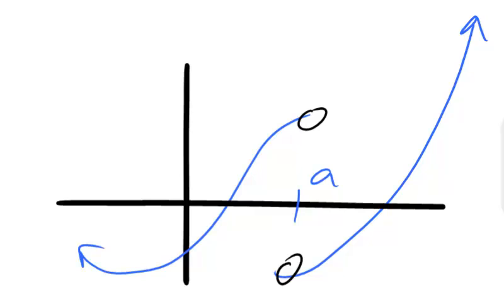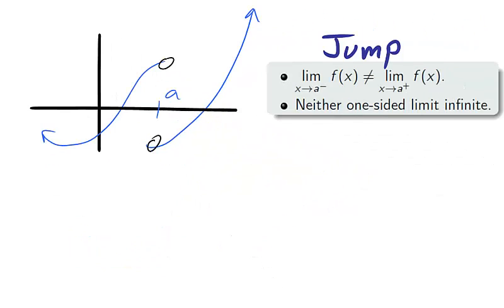Our next graph shows a jump discontinuity at x equals a, which is just what it sounds like, as our ants would have to jump to meet at x equals a. A jump discontinuity is the case where a limit does not exist and neither one-sided limit is infinite.